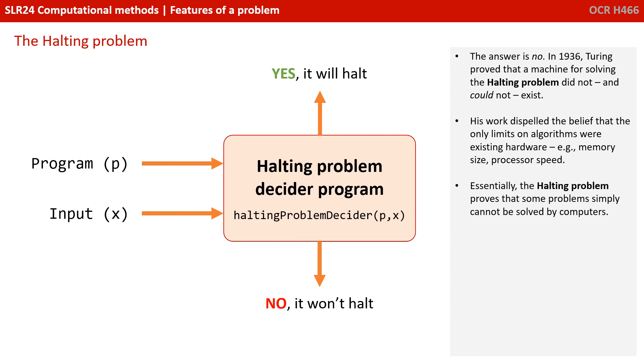Now the answer is no. In 1936, Turing proved that a machine for solving the halting problem did not, and more importantly, could not exist. His work dispelled the belief that the only limits on algorithms were existing hardware. Essentially, the halting problem proves that some problems simply cannot be solved by computers.